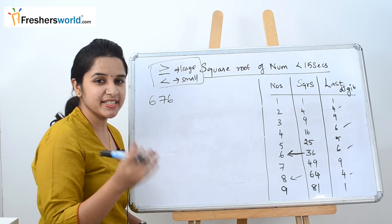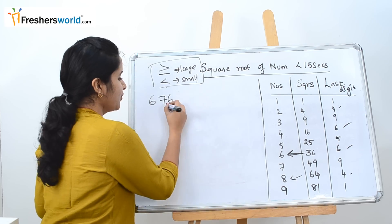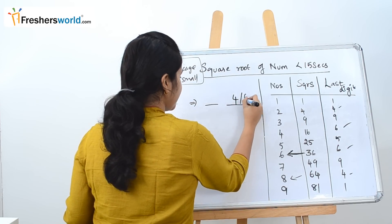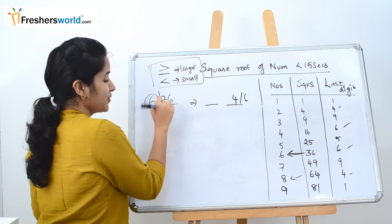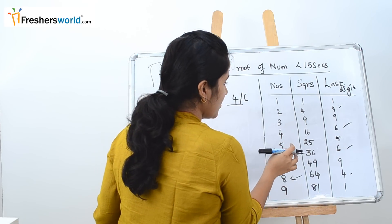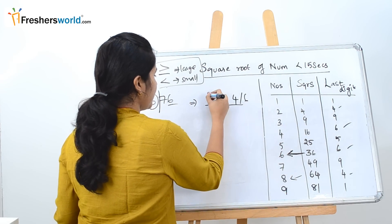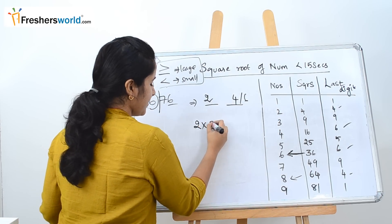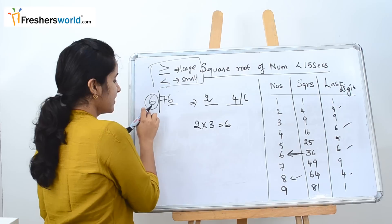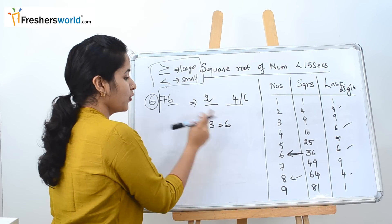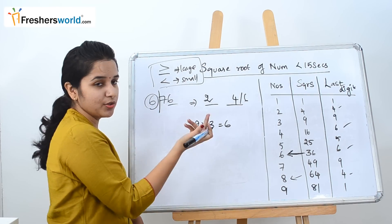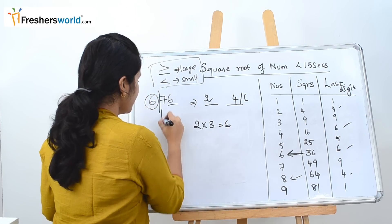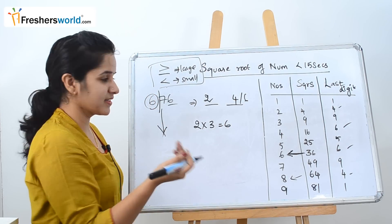The next question is 676. Take the last digit: 6 falls between 4 or 6, so write 4 or 6. Ignore the last two digits; 6 falls between 4 and 9, so take the smallest square root value, which is 2. Multiply 2 by its next number 3 to get 6. The first digit of the question is also 6 — they are equal. So as per our concept, take the large number, which is 6. The square root of 676 is 26.